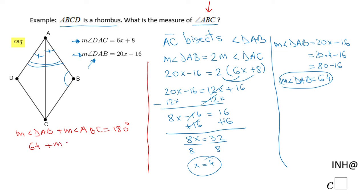Now we can just simply subtract 64 on both sides, and we finish this problem. The measure of angle ABC will be 116 degrees.